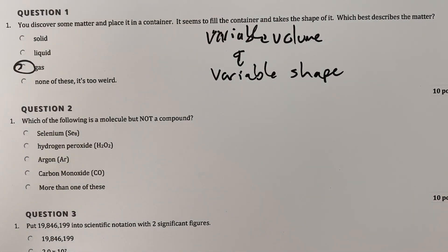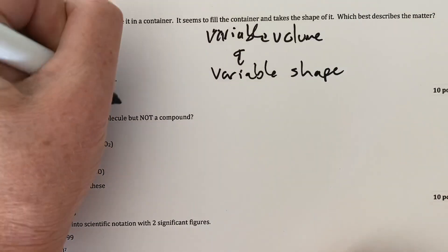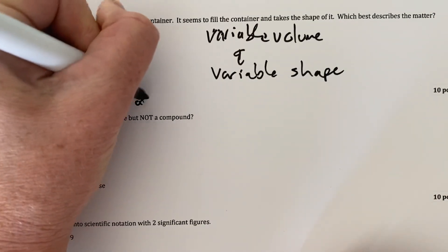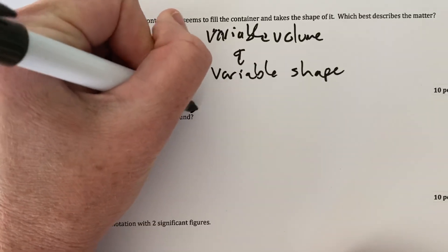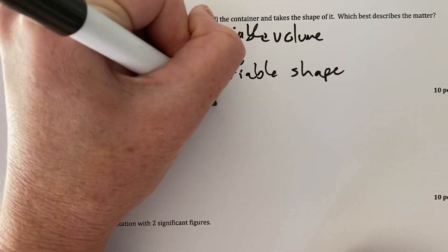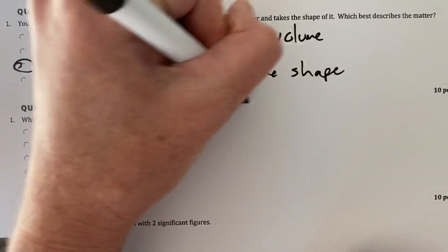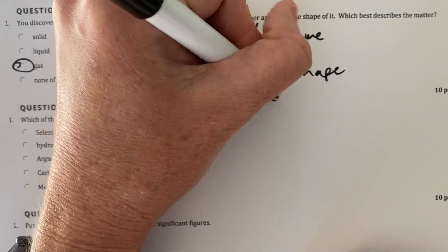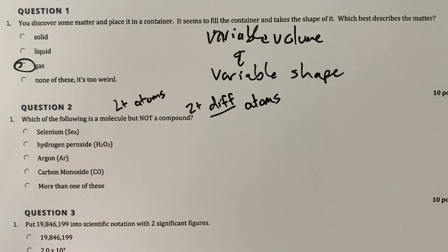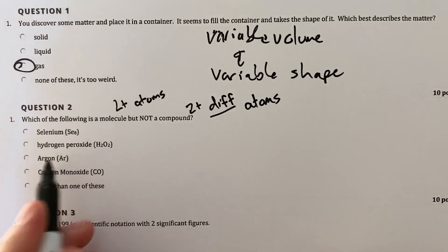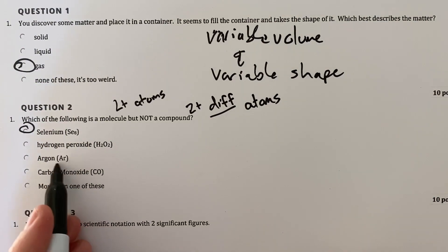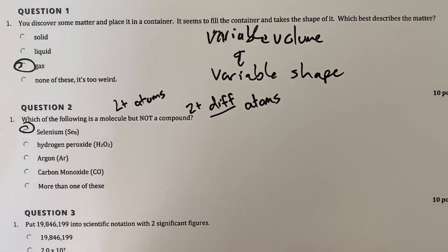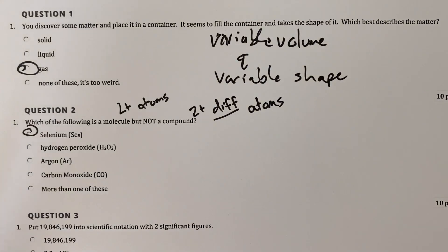The thing we know that has variable volume and variable shape is a gas. Question two, which of the following is a molecule but not a compound? So the definition of a molecule is two or more atoms chemically combined. A compound, in a compound those are two or more different atoms. So we're looking for something that has two or more atoms but the atoms can't be different. In that case, the only thing on this list is selenium.